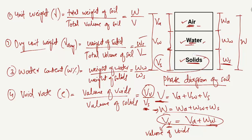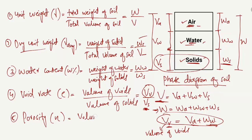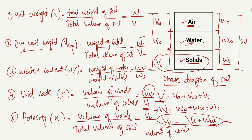The fifth one is the porosity. Porosity is represented by n, and it is equal to the volume of voids (VV) divided by the total volume of soil (V), so n = VV / V. The total volume V includes the volume of air, volume of water, and the volume of solids.